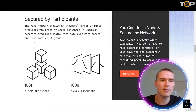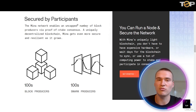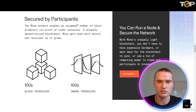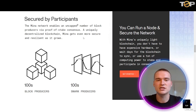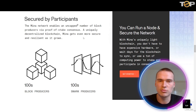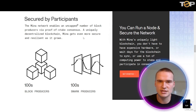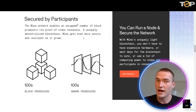It's secured by participants and enables an uncapped number of block producers via proof-of-stake consensus, which makes it a uniquely decentralized blockchain. Most blockchains only have a couple of validators, while MENA has hundreds of block producers and snark producers to increase decentralization, privacy, and security.